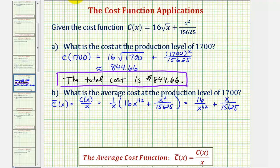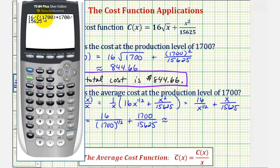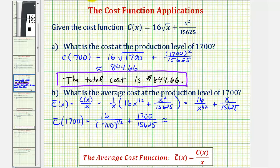For the second product, one factor of x simplifies out, leaving us with plus x divided by 15,625. So this is the average cost function. To find the average cost at the production level of 1,700, we evaluate at x equals 1,700. The 1/2 power is the same as the square root of 1,700. Rounding to the nearest cent, the average cost rounds up to $0.50, or 50 cents per item at this production level.